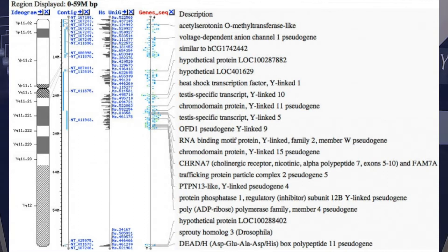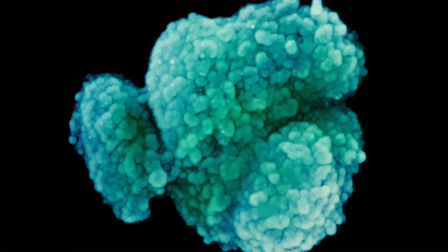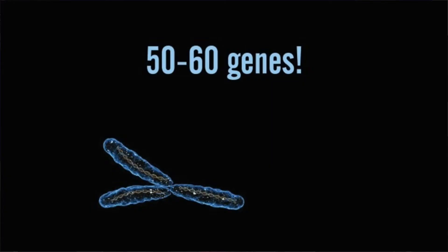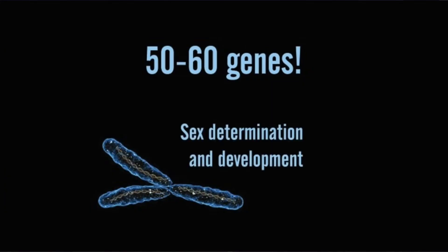The Y chromosome spans around 59 million base pairs and represents almost 2% of the total DNA in a human cell. It's estimated that the Y chromosome contains around 50 to 60 genes with information for making proteins. As only men carry the Y chromosome, these genes tend to be concerned with male sex determination and development.